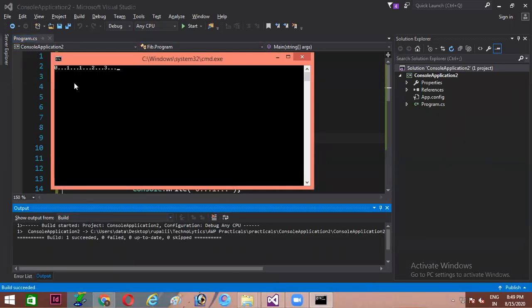since our N value was 5, we have got 5 numbers. 0, 1, which were the basic numbers. 0 plus 1 is 1, 1 plus 1 is 2, 1 plus 2 is 3. So, all together, 1, 2, 3, 4 and 5 numbers we have got.